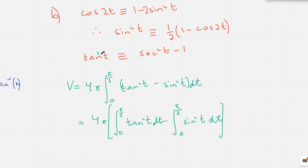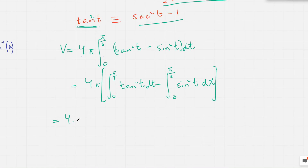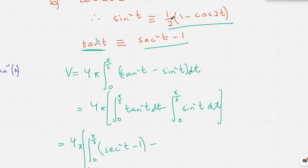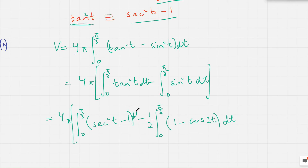I'm going to use these identities. Tan squared t can be written as sec squared t minus 1. And sin squared t can be written as one half times 1 minus cos 2t using the double angle identity. Writing that down: we have 4 pi, and the integral of sec squared t minus 1, minus one half times the integral of 1 minus cos 2t, with respect to t.